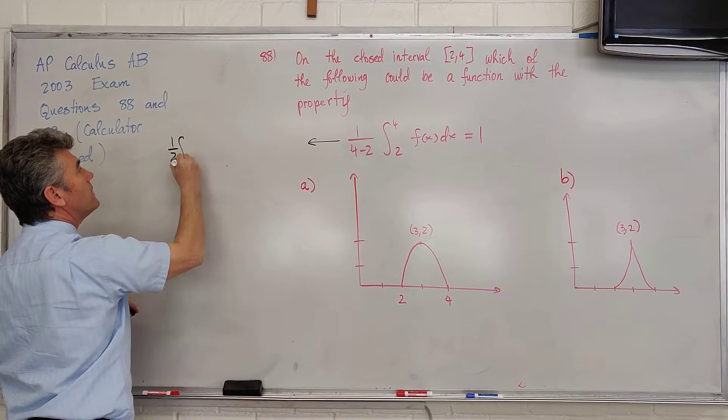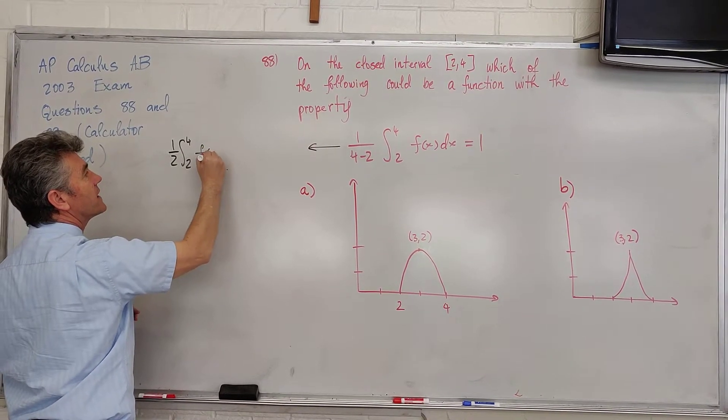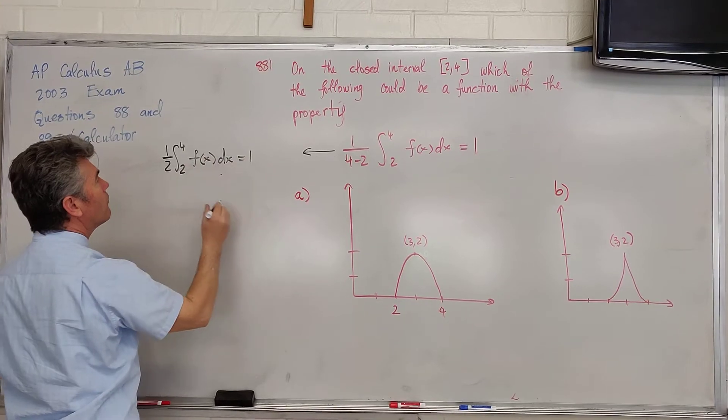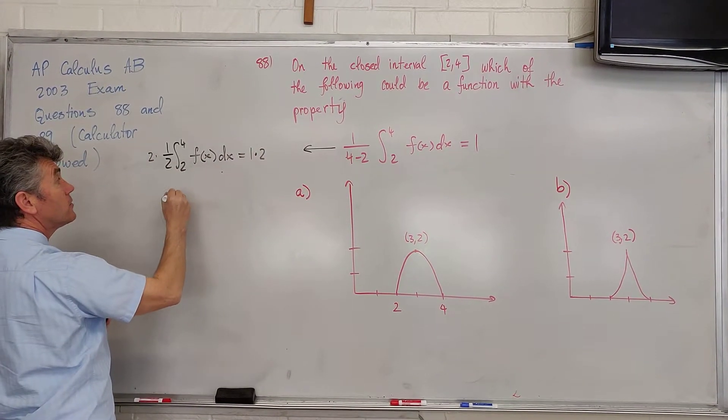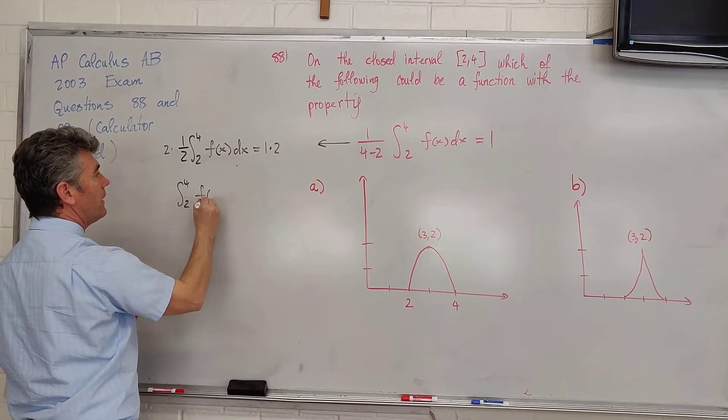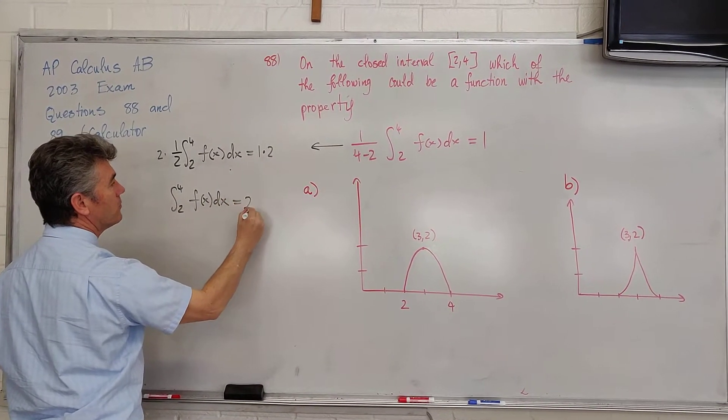Half of the integral from 2 to 4 of f of x dx equals 1. We're going to multiply by 2 on both sides. And so we have the integral from 2 to 4 of f of x dx equals 2.